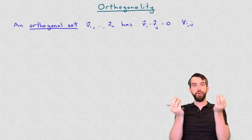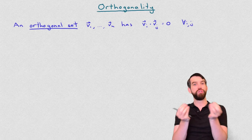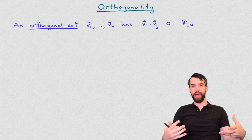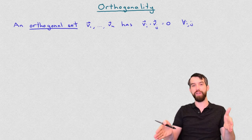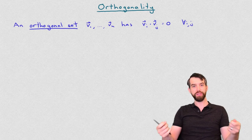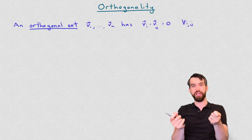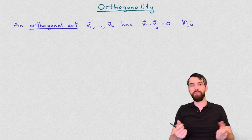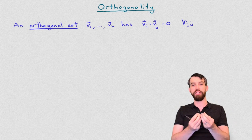We've previously seen that two vectors are orthogonal if their dot product is zero. We can slightly generalize that idea to the idea of an orthogonal set, where I have n vectors, and it's an orthogonal set if every possible pairing of those vectors is also zero. For every i and every j, if I pick out the i-th vector and the j-th vector of my set, then that dot product is zero.